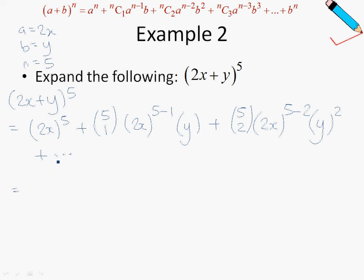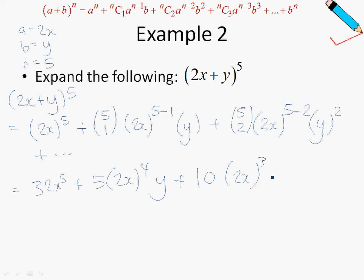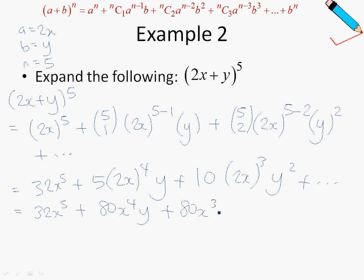Simplifying: 2 to the power of 5 is 32, so I've got 32x⁵. Then 5 choose 1 is just 5, so 5 times 2x to the power of 4 times y. Then 5 choose 2 is just 10, times 2x to the power of 3, times y squared. So simplifying: 32x⁵ + 80x⁴y + 80x³y², plus more terms indicated by the dots at the back — this means the expression has not ended and there are many more terms to go.